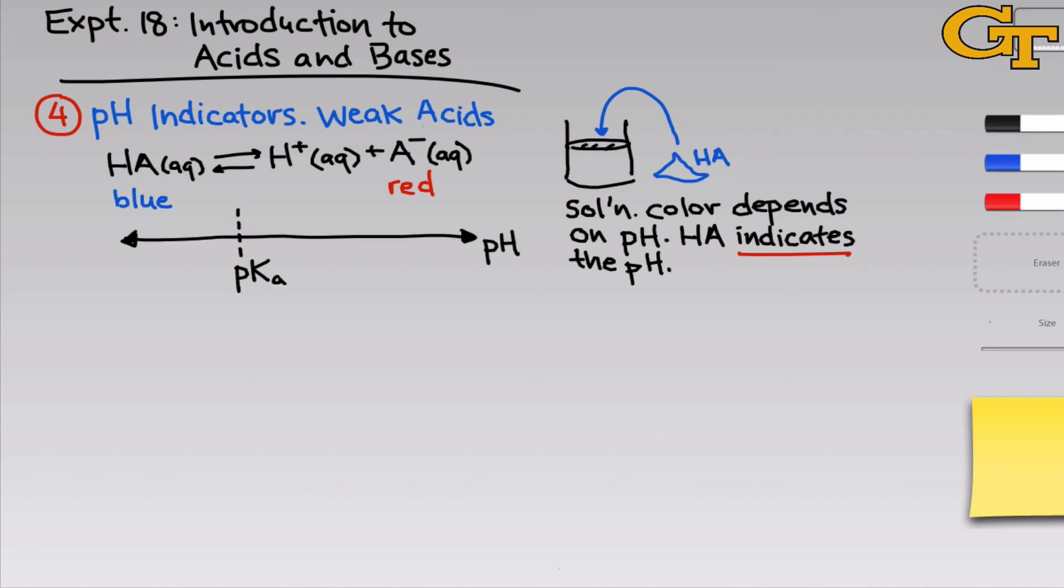We can take this indicator and add it to a solution of unknown pH. The resulting solution color depends on the pH of the solution and so in that way HA indicates the pH. To bring a little bit more of a quantitative feel to this, we can ask at what pH do we go from a blue solution to a red solution. When the pKa equals the pH, we have equal concentrations of HA and A-. So at that point, we have what you might think of as a purple solution. And as we move to a lower pH, HA starts to dominate because we have an excess of protons which drives that weak acid equilibrium to the left, forming more of the blue HA species. On the other hand, if we're in a basic solution, that will drive this equilibrium to the right and we'll end up with a red solution because the conjugate base, A-, is dominating.